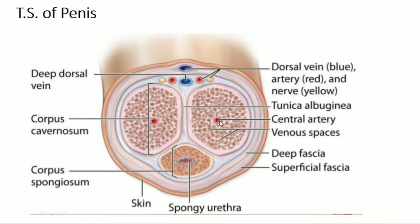The main function of this is the erection of the male penis. There is also the penis space which is filled by blood. The other part is known as the tunica albuginea, which is the septum between these two tissues. On the dorsal side, there are blood vessels — blue shows veins, red shows arteries, and yellow shows the nerves.